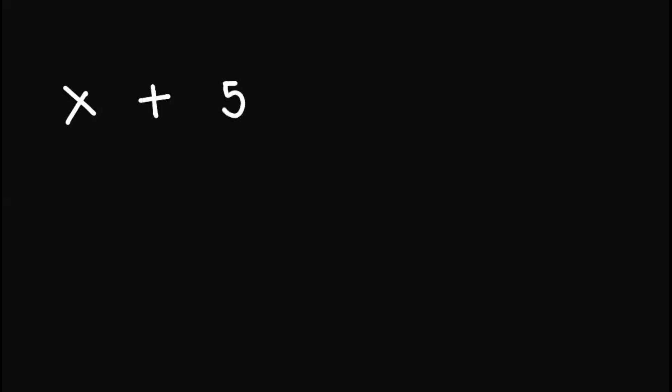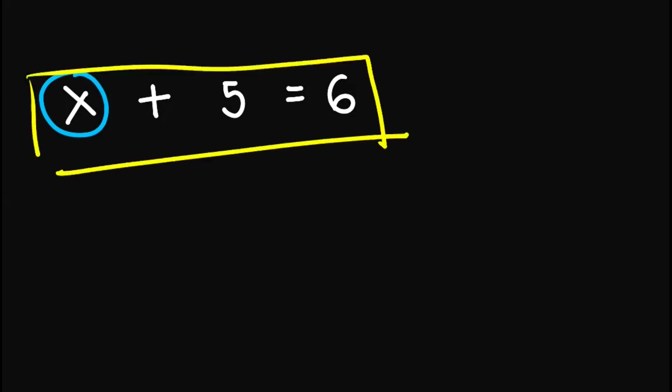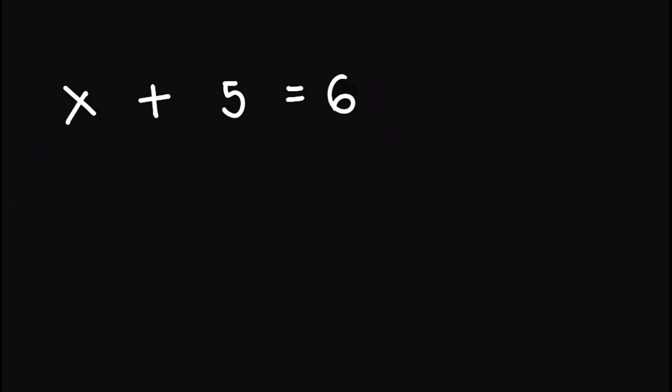Let's have x plus 5 equals 6. So what do we do when we solve linear equations? Basically, the goal is to find the value of x that would make this whole equation true or correct. Intuitively, we can observe that for this equation to be true, x must be equal to 1, since 1 plus 5 is equal to 6.